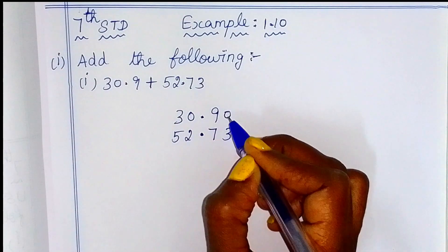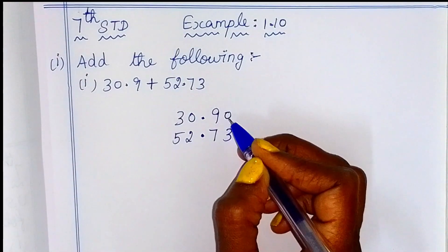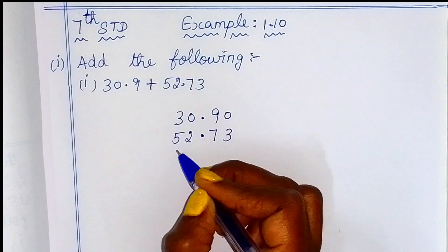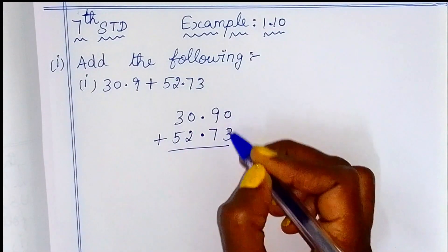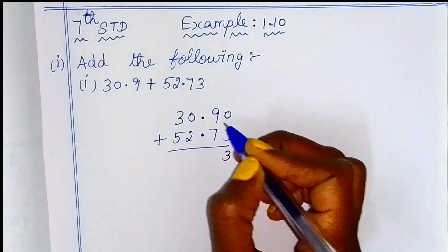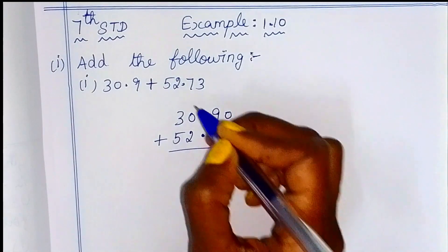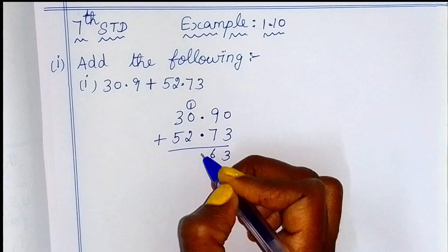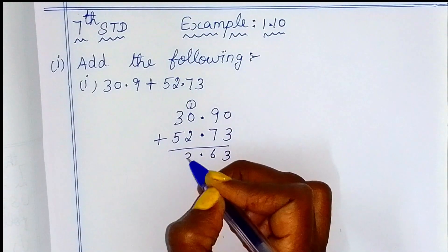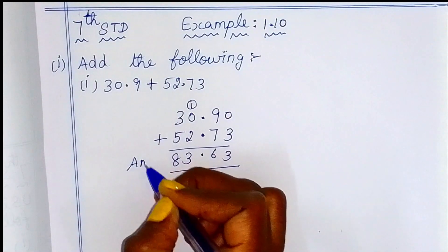Decimal point. When we add zero, we can add value. So we can add. Now, 0 plus 3 is 3, 9 plus 7 is 16, so 1 carry over. Decimal point. So 2 plus 1 is 3, 5 plus 3 is 8. So this is the answer.